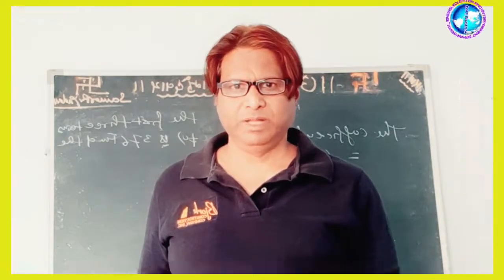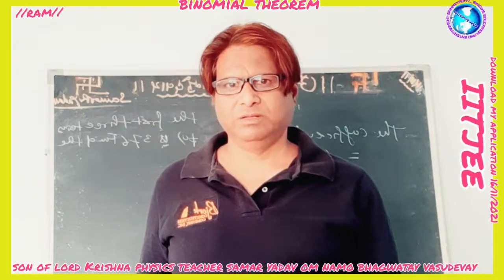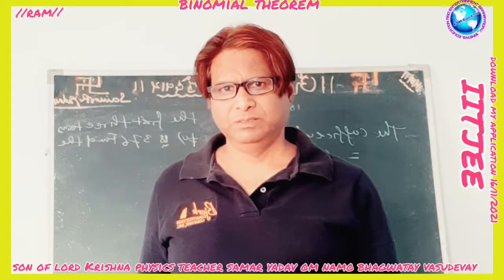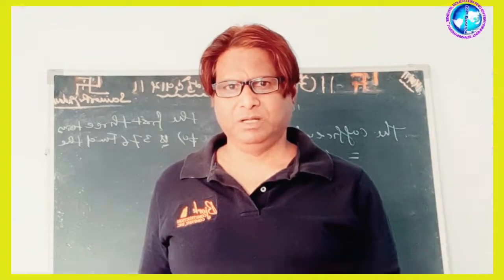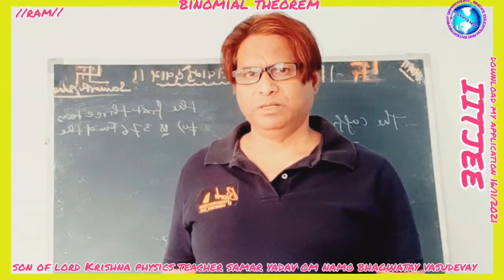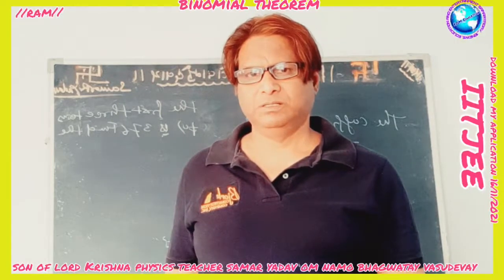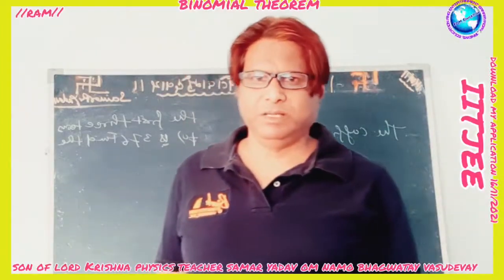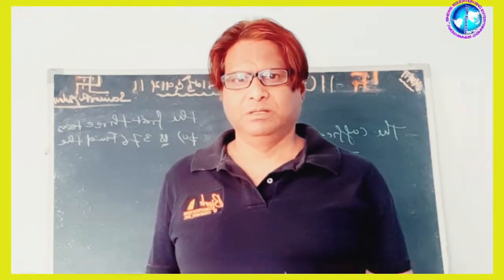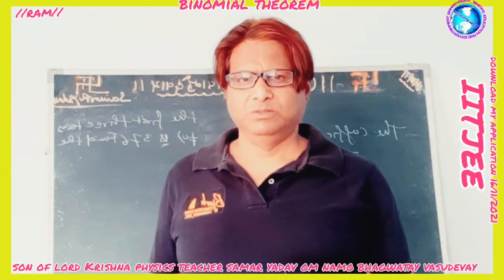Keeping n = 10, the expression becomes (x² - 3/x)^10. We write T_r = 10C_r · (x²)^(10-r) · (-3/x)^r. Setting 20 - 3r = 8 gives r = 4. Therefore, the coefficient of x^8 = 10C4 · (-3)^4 = 17010.